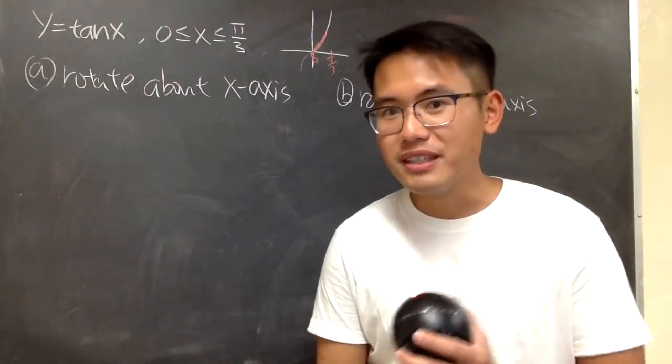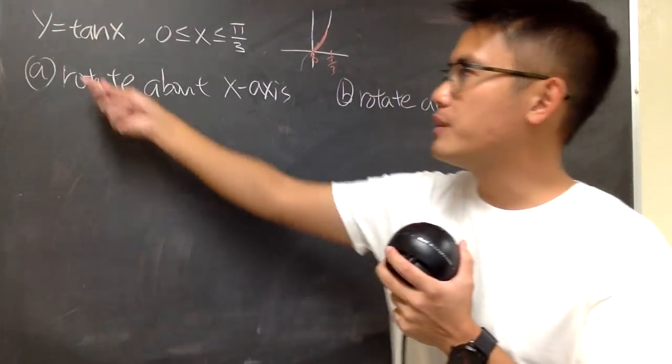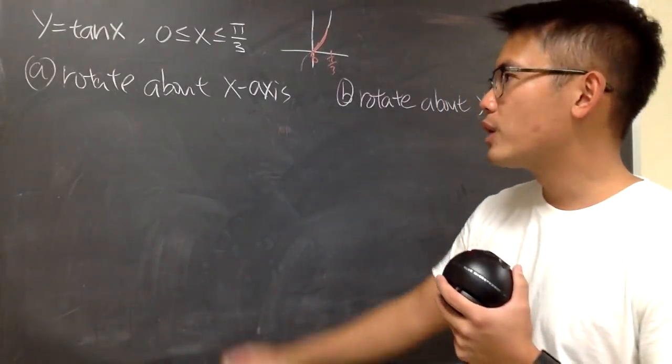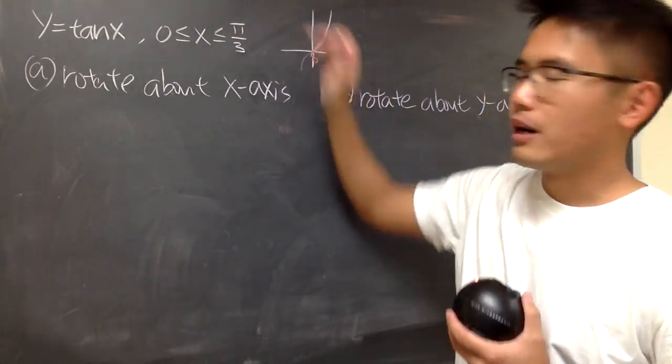Okay, in this video, I'll show you guys how to find the surface area. We are given the curve to be tangent x, and we are going from x equals 0 up to pi over 3.